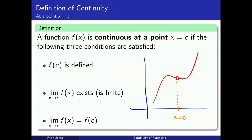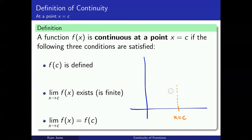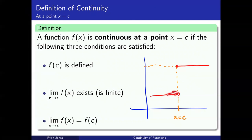The third and final condition is that the limit and the function value have to be the same. We'll see examples of how each condition can fail. For the second condition, consider a function that has a jump: the function is defined at x equals c, but the left and right limits are different, so the limit does not exist. We'll call this a jump discontinuity — the left and right limits are not the same thing, so that middle condition fails.